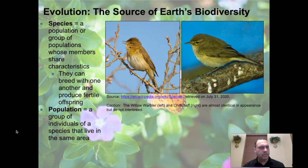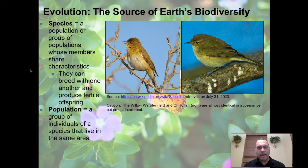We're going to begin by learning a couple of very important terms that are thrown about in textbooks, on television, and on the internet. A lot of people use these words but don't really know what they mean. The first word is species — a population, or group of populations, whose members share characteristics that result in animals that can breed with one another and produce fertile offspring.